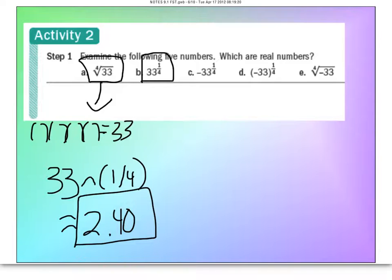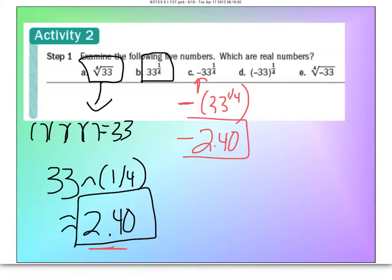Now for C, they want us to realize this negative is just sitting out there on its own. And then we're really just doing here 33 to the 1/4th power. Again, we already found that answer, which was down here. So it's the 2.40, but we make our answer negative for this one.